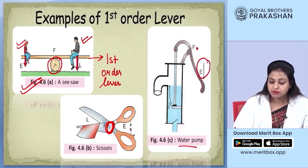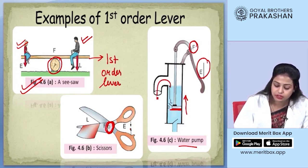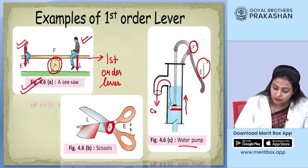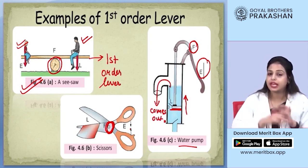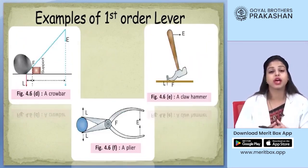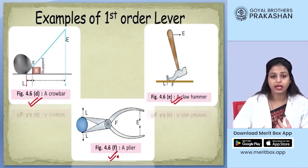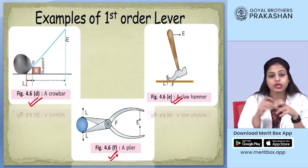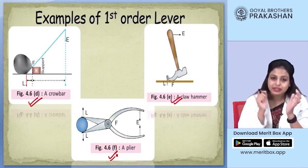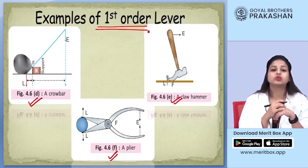In the hand pump, it is pivoted at a point that acts as the fulcrum, and the load takes up water, pulls it up, and it comes out from the opening. There are also tools that work as first order levers, such as a crowbar, a claw hammer, and a plier. All these instruments are used by carpenters to pull out nails or dig out anything that has been stuck, and they all work on the principle of first order lever.